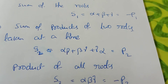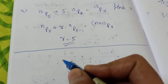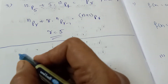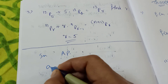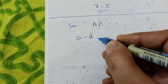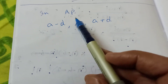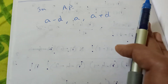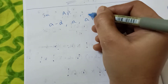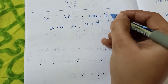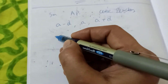Now, some additional formulas. Suppose the roots of a cubic equation are in AP, GP, or HP — how do we find them? If three roots are in AP, we take them as a − d, a, a + d. Remember this formula. For a cubic equation with roots in AP, use a − d, a, a + d.